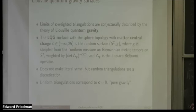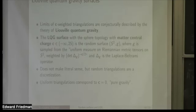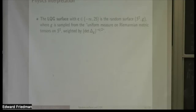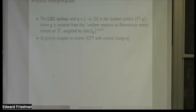The case of uniform triangulations corresponds to central charge c equals zero — pure gravity — where we just sample from the uniform measure on possible Riemannian metric tensors. These quantum gravity surfaces are supposed to be models of two-dimensional gravity coupled to some sort of matter, where the matter is represented by a conformal field theory with central charge c, and the determinant of the Laplacian is supposed to be like the partition function of this matter.